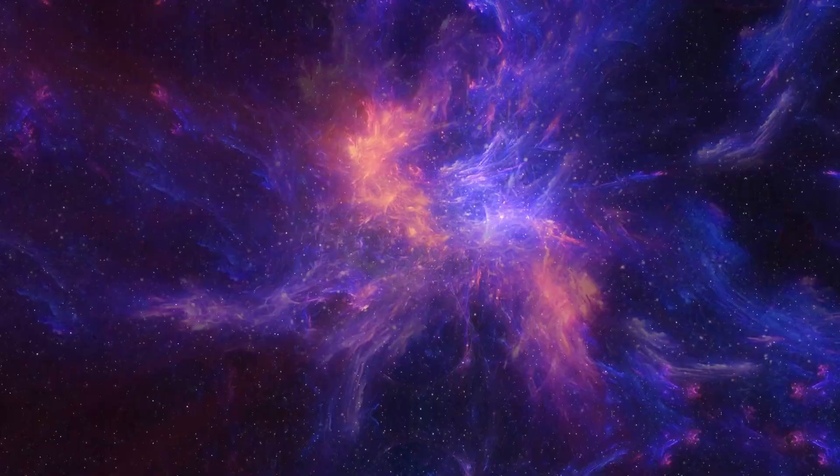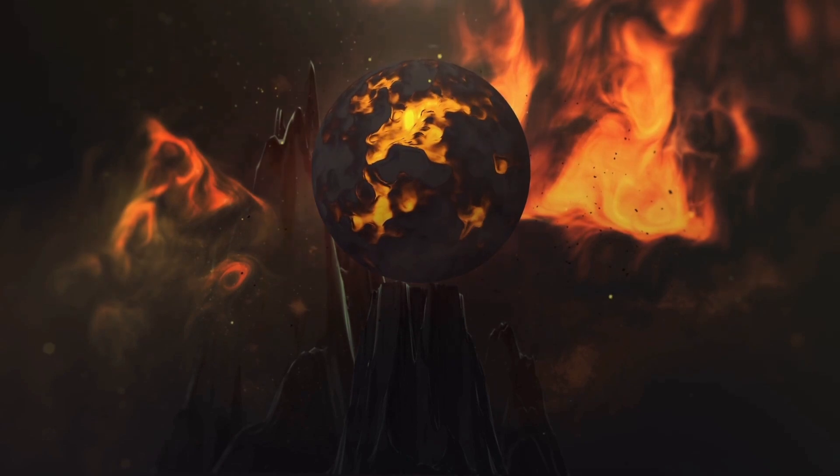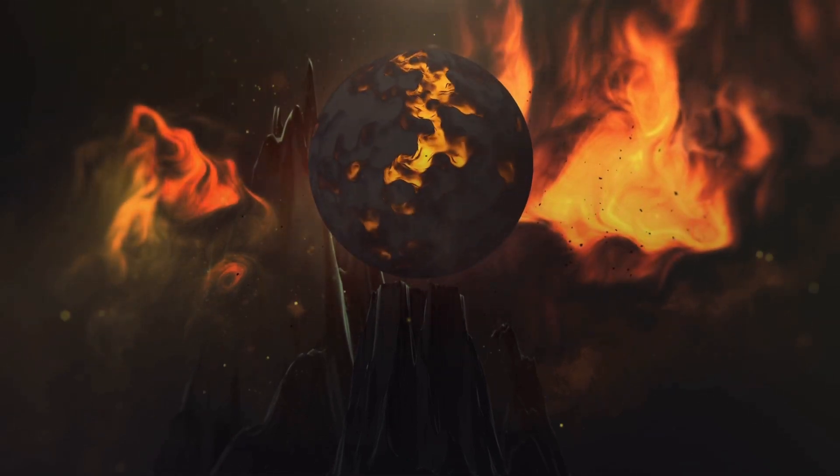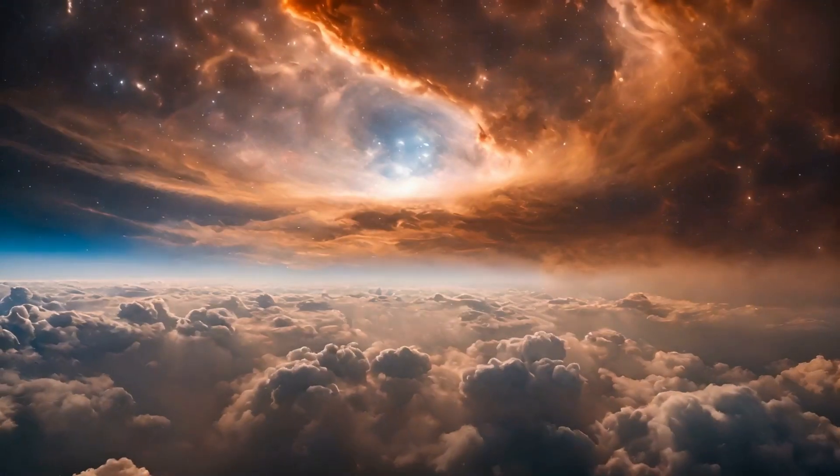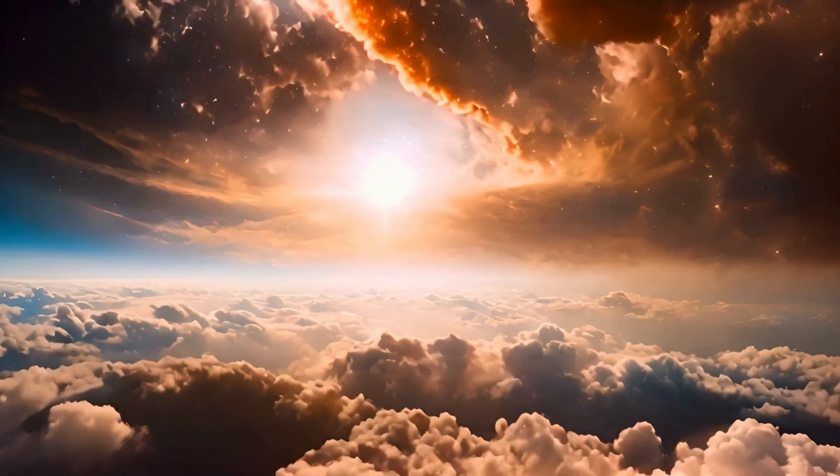Betelgeuse is currently undergoing fusion processes, gradually progressing through various elements like helium, carbon, oxygen, silicon, and iron. As a red giant star, it fuses helium into carbon in its core, a process that takes thousands of years.